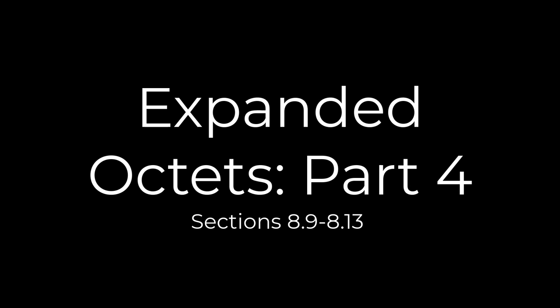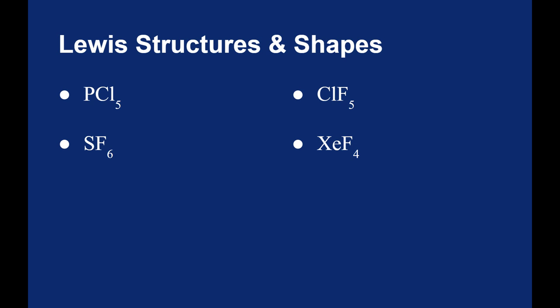In the last video, we looked at variations of the trigonal bipyramid shape and what happens to the shape when you replace bonds with lone pairs of electrons. In this video, I want to look at what happens to the octahedral shape when we do the same. I want to look at two molecules: chlorine pentafluoride and xenon tetrafluoride.